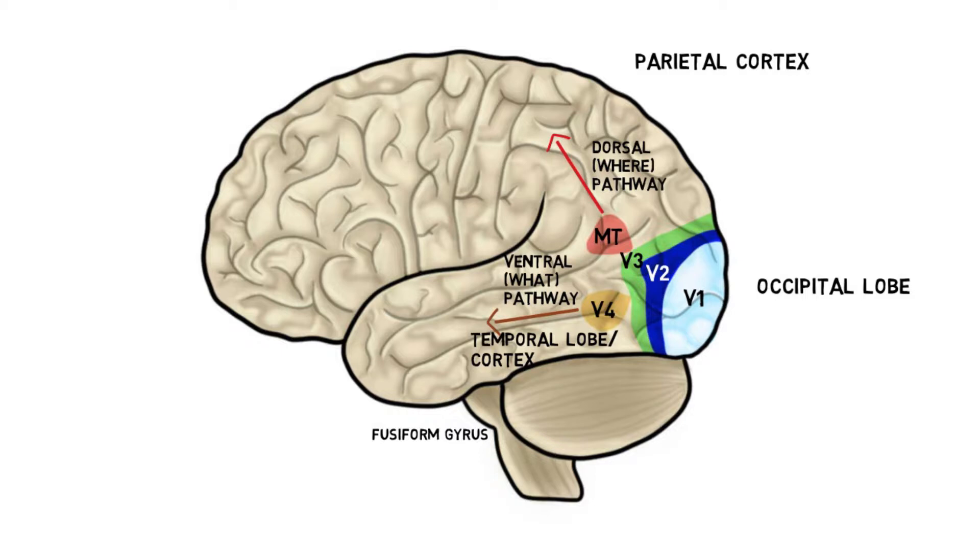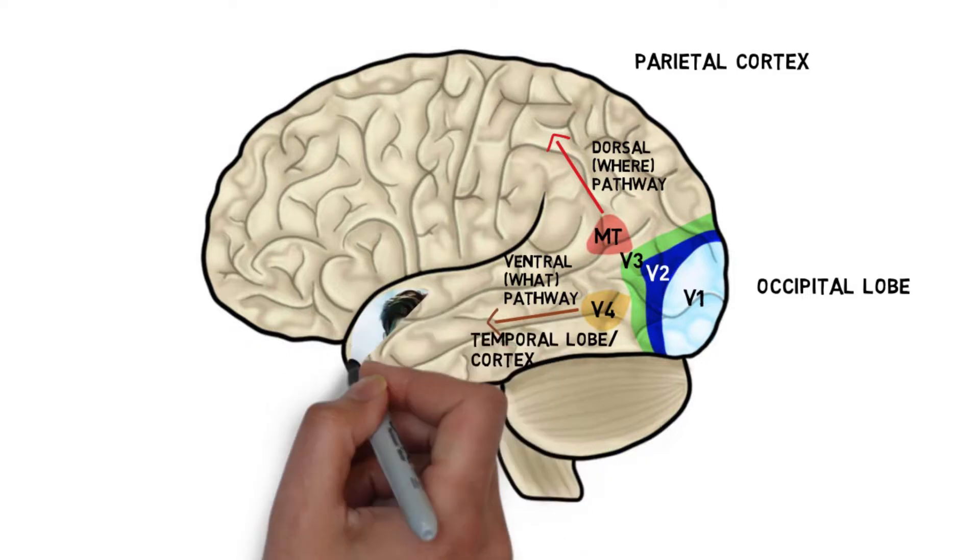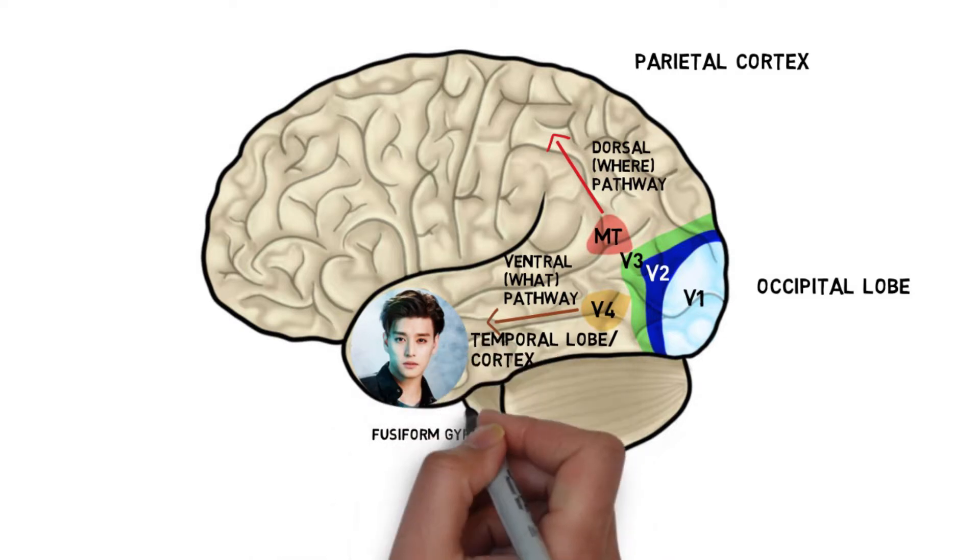The areas in the ventral pathway are involved in processing visual information regarding the form and shape of objects and their recognition, so what an object is, for example a face.